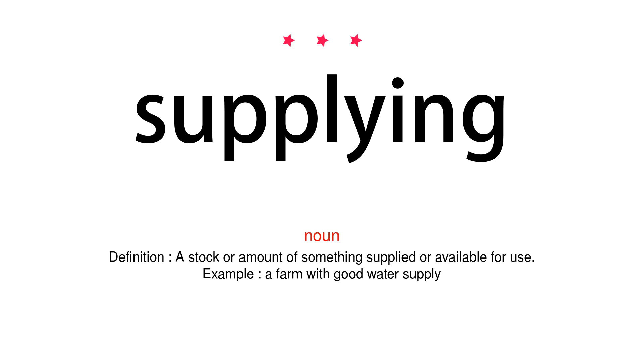Noun. Definition: A stock or amount of something supplied or available for use. Example: A farm with good water supply.